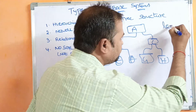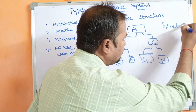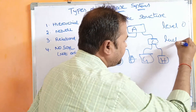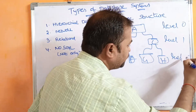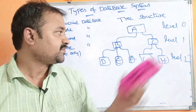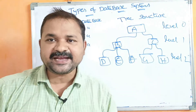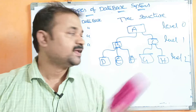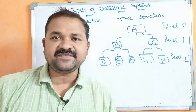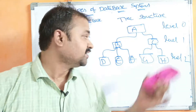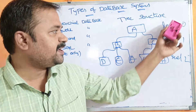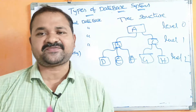Level 0 is the grandparent level, level 1 is the parent level, and level 2 is the children level — grandparent, parent, children, and so on.